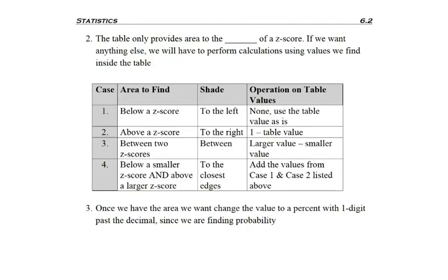Now that we're good at finding numbers on the table, sometimes there's calculations that have to be done. Remember our table only provides the area to the left of a z-score. In Case 1, if we're asked to find the area below a z-score, I shade to the left. Because this is how the table works, I don't have to do anything - I just look up the number and answer with the value inside the table as is.